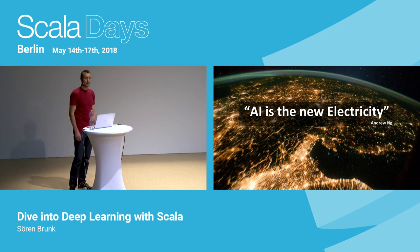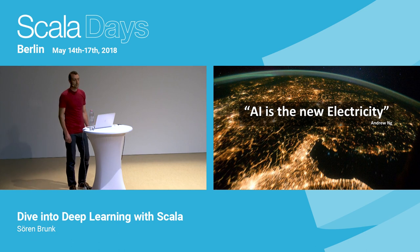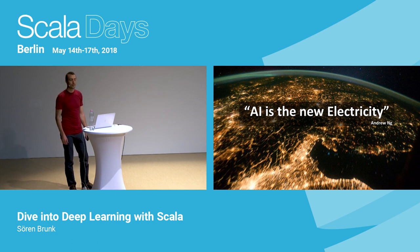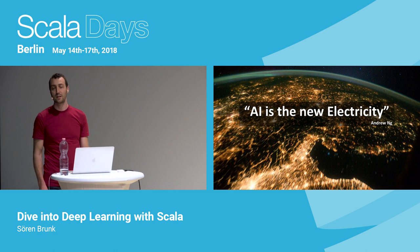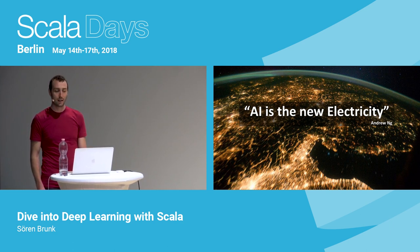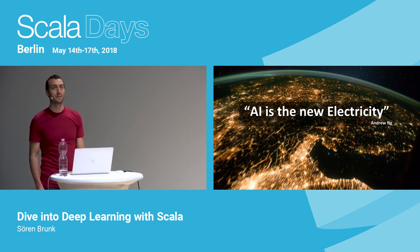What does he mean by that? By the end of the 19th century, electricity was one of the main drivers behind the second industrial revolution. It completely transformed many industries like manufacturing, communication and more, eventually led to electronics and computers, and literally powers our modern life. What Andrew is saying is that much like electricity revolutionized industries and our lives, AI will have a similar impact.